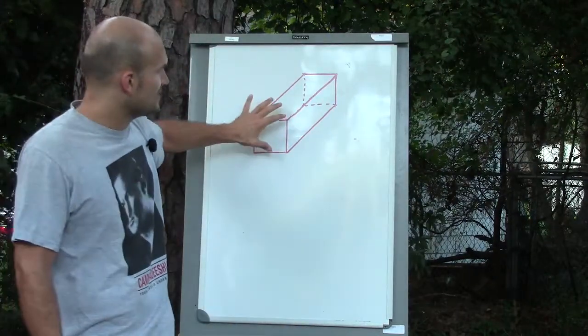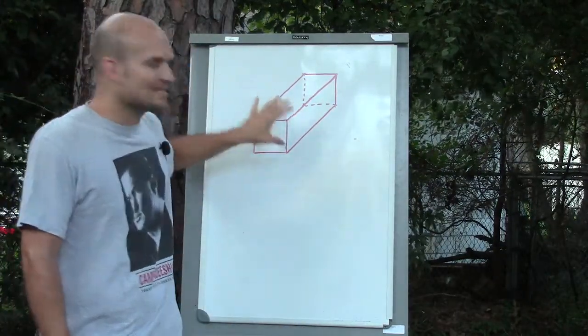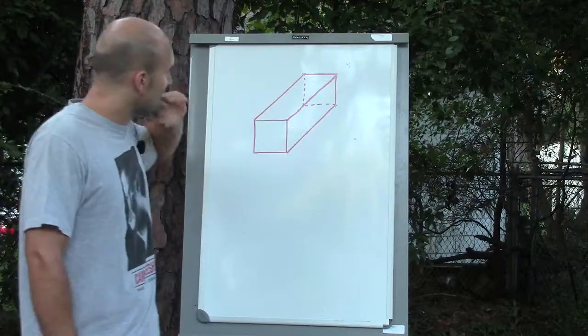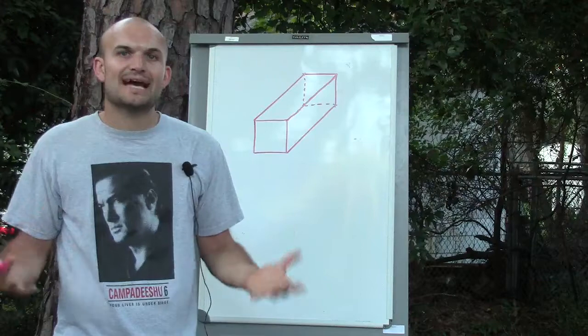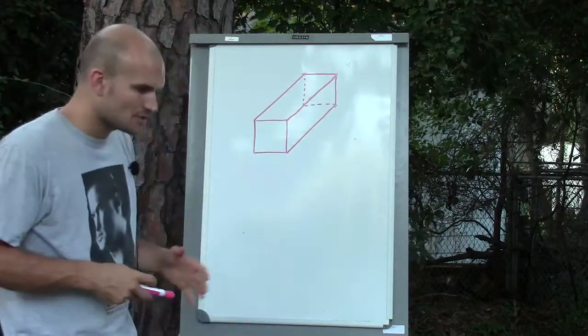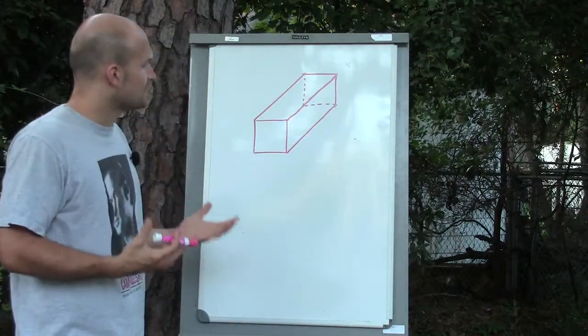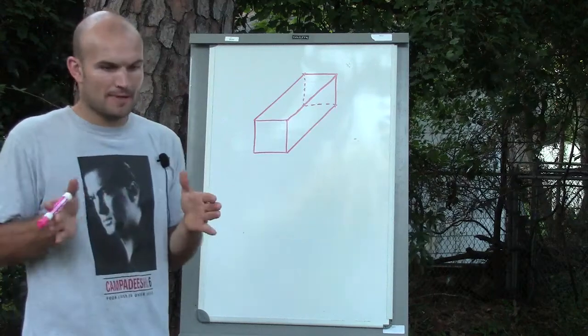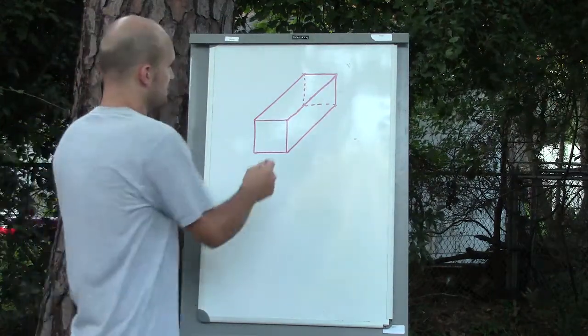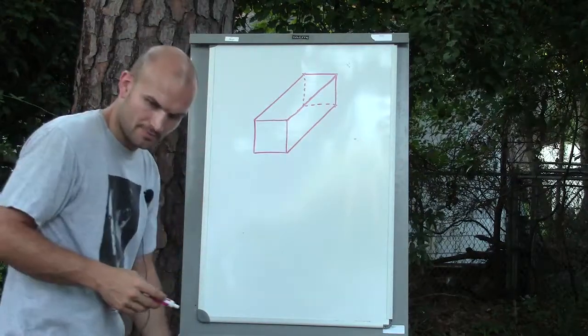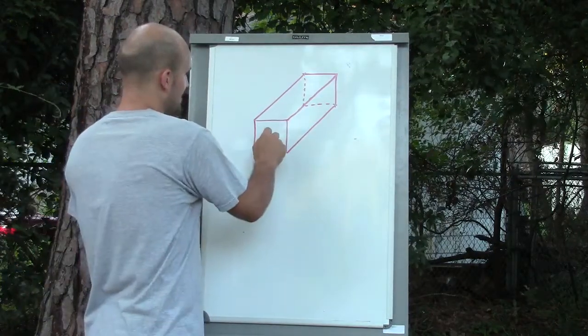So the first thing I need to think about is, I'm given a rectangular prism and what I need to do is visualize how many side lengths am I going to have. So what you might want to do first of all is count your sides that you already have, that you can see.